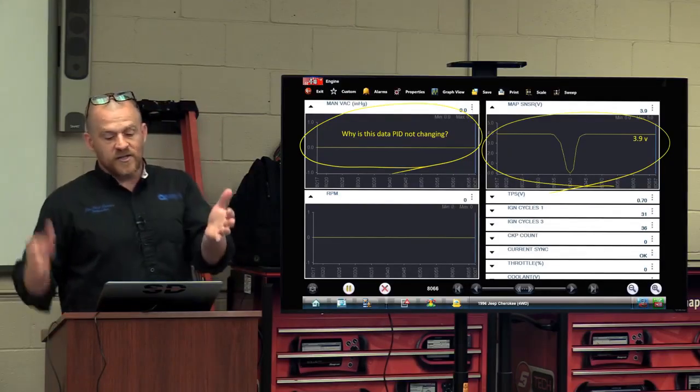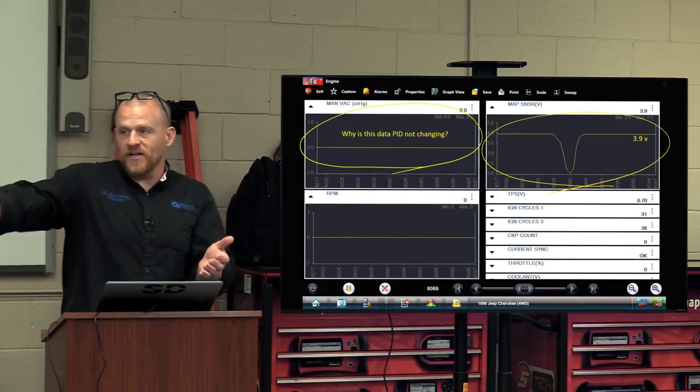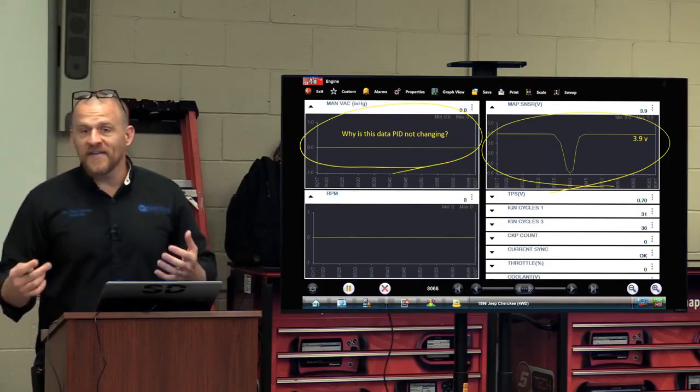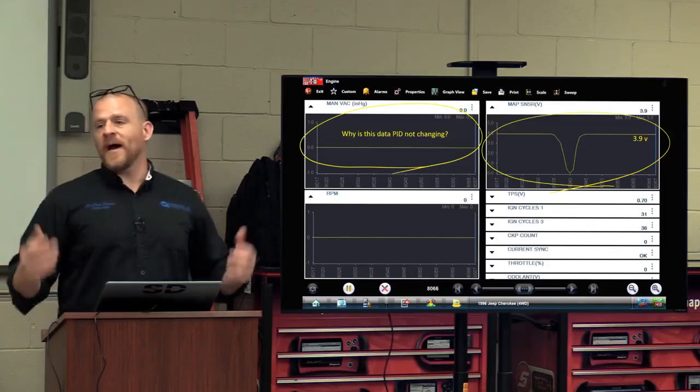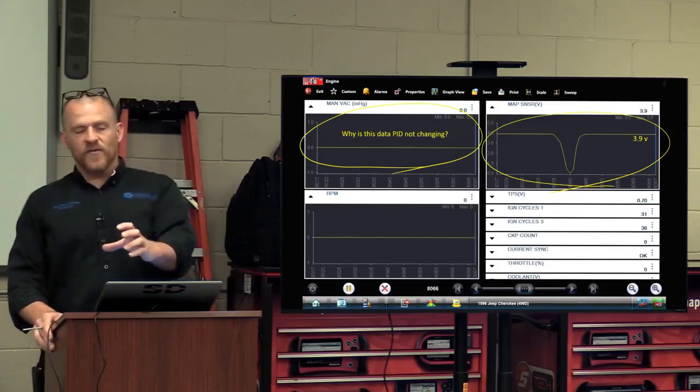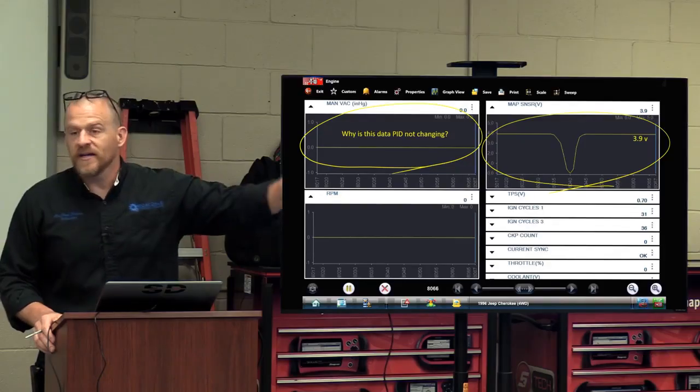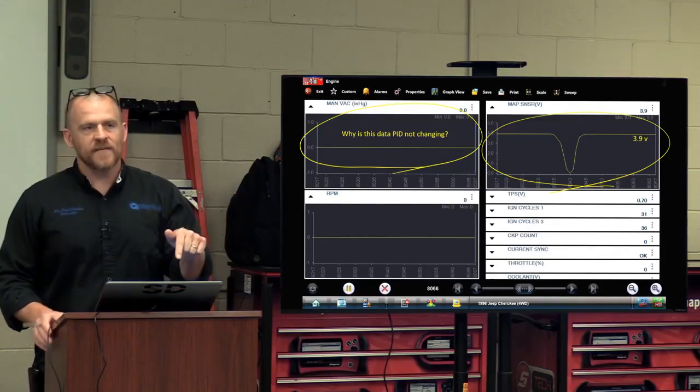Why is the manifold vacuum, which is based off the map voltage, why is that not changing? Because the car is not running and the engine computer is not looking at the map sensor. Even though the signal voltage is changing, it's not looking at that manifold vacuum because it knows the car is not running. It's not going to update. How do I get that to update?